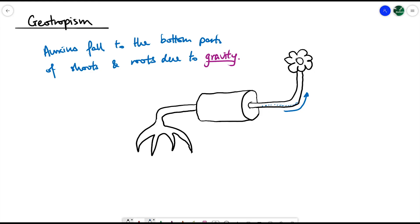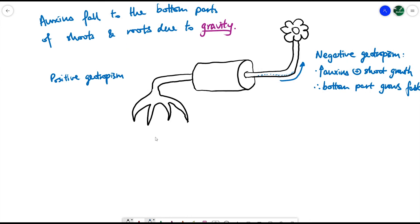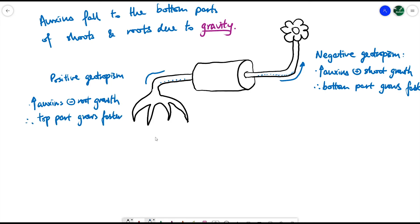This is called negative geotropism for the shoot — the high auxin concentration on the bottom promotes shoot growth, so the bottom part grows faster, bending the shoot upward. For the roots, they demonstrate positive geotropism. The auxins are also found on the bottom part of the root, but because higher auxin concentration actually inhibits root growth, the top part with less auxin grows faster. Therefore the roots bend towards the ground, towards where gravity pulls them.